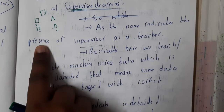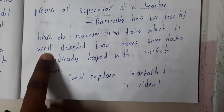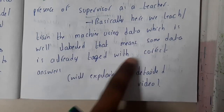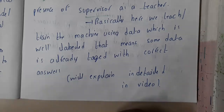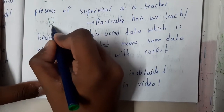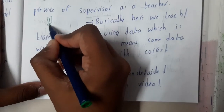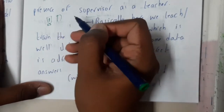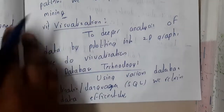Supervised learning means there is a supervisor, like a teacher, observing the process. We train the machine using data that is well-labeled — meaning some data is already tagged with the correct answers. For example, in image processing, if the image is a car you name the file 'car.jpg'; if it is a bus, 'bus.jpg'. That concept is nothing but supervised learning.